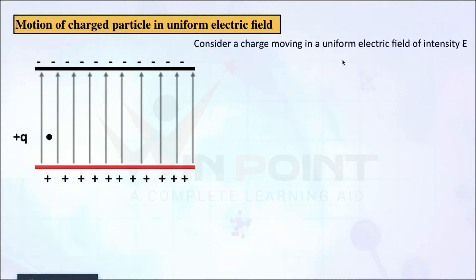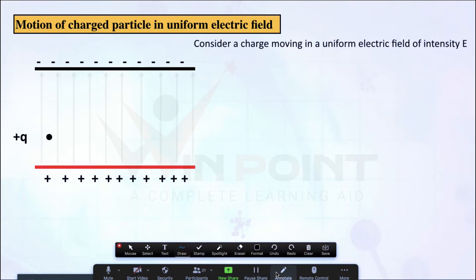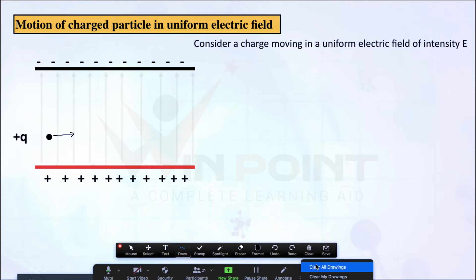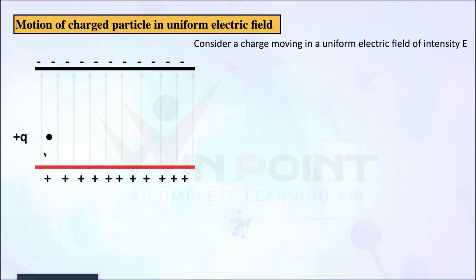Consider a charge moving in a uniform electric field of intensity E. This charge is moving with a velocity V, trying to move in a straight direction. It is a positive charge Q moving with velocity V. But the charge is not going to move in a straight line because there is a negative plate. There will be a small change in the path — it will get attracted towards the negative plate.